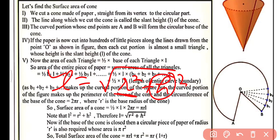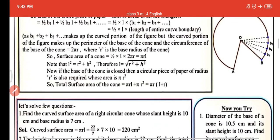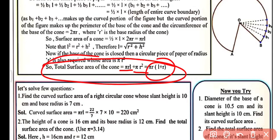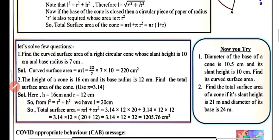Now, if the base of the cone is closed, a circular piece of paper of radius r is required, whose area is πr². So the total surface area of the cone equals the curved surface area plus the base area: πrl + πr². Taking πr as common, this becomes πr(l + r), or equivalently πr(r + l). Keep this in mind.